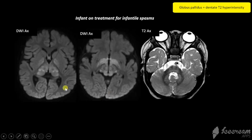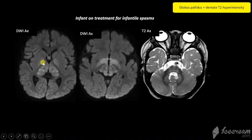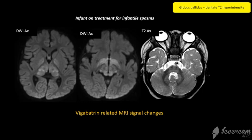In this classic case, history is very important. This child is on treatment for infantile spasms and has symmetric changes in the globus pallidus, thalami, subthalamic nuclei, brainstem, and dentate nuclei. These are characteristic vigabatrin-related MRI signal changes. It is important to be aware of this so as not to misdiagnose this as a metabolic or mitochondrial etiology.